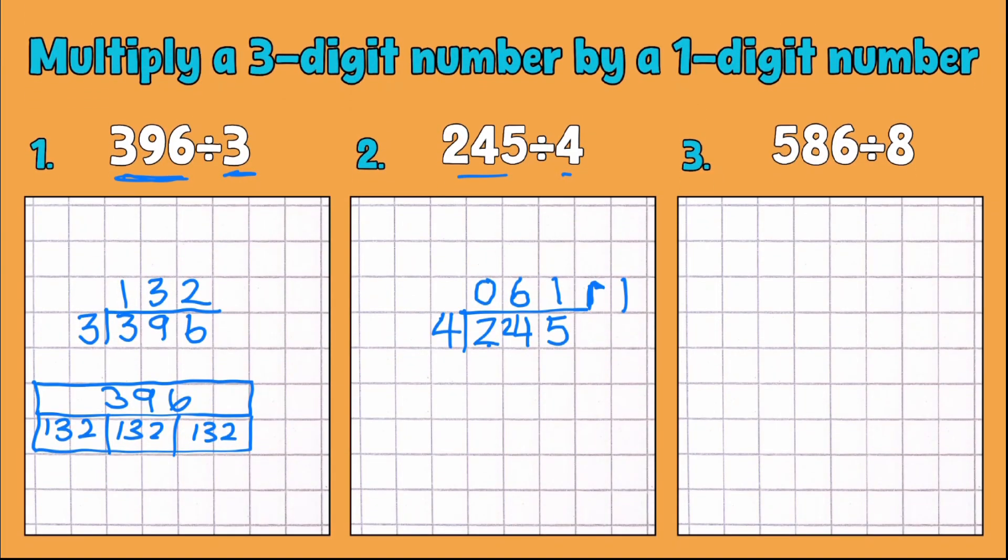So we've got our final example here, which is 586 divided by eight. So let's get this one into our bus stop. 586 inside, what I'm dividing by just on the outside there. So same again with this one. How many eights can I fit inside a five? I can't. So my five will have to move to my next number.